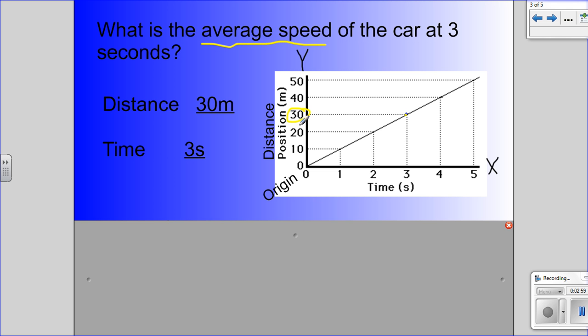If you were to put 30 as an answer, that would be giving me the distance. That's not what it's asking for. It's asking for average speed. So you still have to do the average speed calculation. Thinking back to our previous lesson, we learned that average speed is distance divided by time.